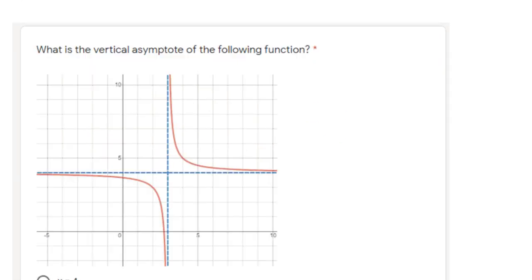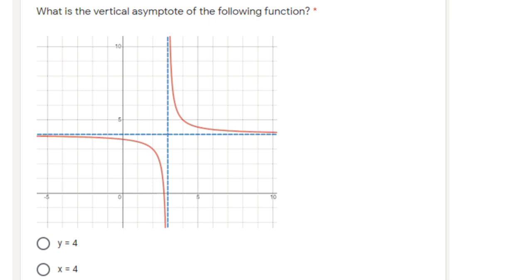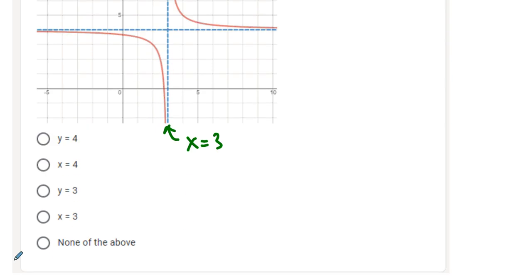Next one asked about the vertical asymptote of a rational function. The vertical one is this one right here, it's going through x equals 3. It's a vertical line, so it has to be an x equation. So it's x equals 3.